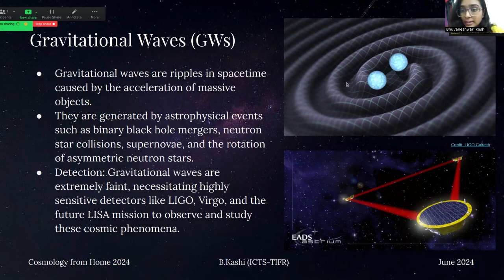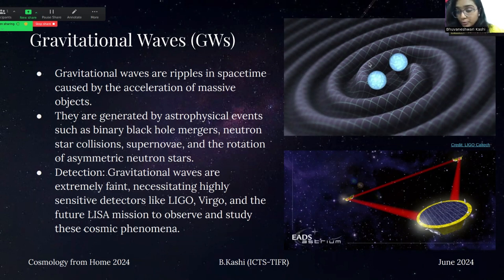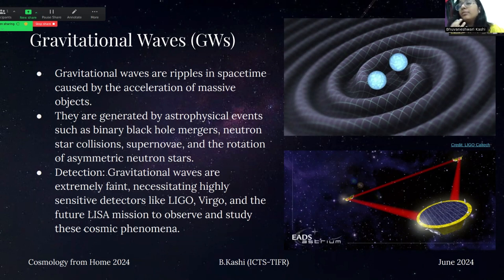In the picture, you can see that two compact objects are in a merger and they create gravitational waves, and the gravitational waves are propagating outwards. By the time they reach Earth, these waves become very faint and it's very difficult for us to detect.